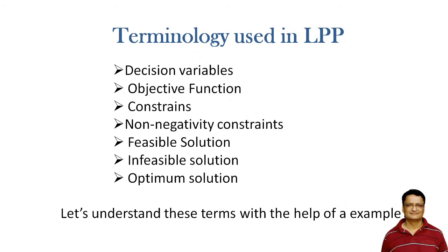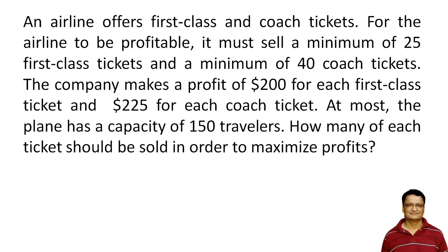Here is an example: an airline offers first class and coach tickets. For the airline to be profitable, it must sell a minimum of 25 first class tickets and a minimum of 40 coach tickets. The company makes a profit of $200 for each first class ticket and $225 for each coach ticket. At most, the plane has a capacity of 150 travelers.